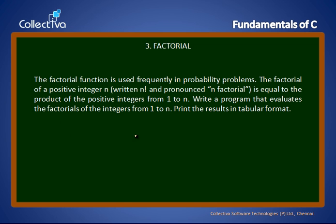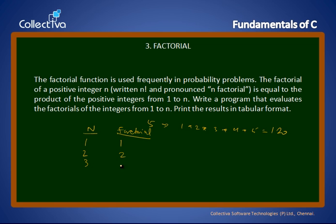What do we call n factorial? For example, 5 factorial is 1 × 2 × 3 × 4 × 5. So the values are: 1 factorial = 1, 2 factorial = 2, 3 factorial = 6, 4 factorial = 24, 5 factorial = 120. That is how we display n factorial.